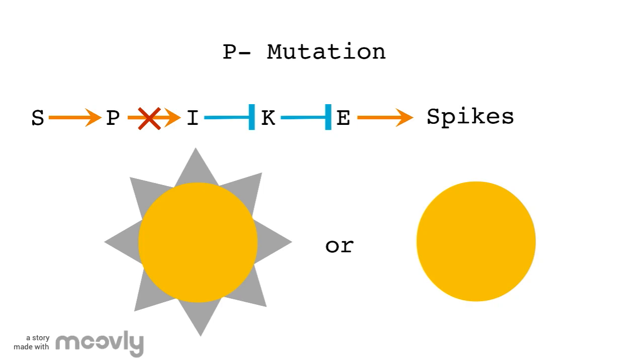The first mutation we'll look at resulted in no functional P genes. To determine the results, we simply need to follow the pathway. If the P gene stops working, the I gene will be expressed, preventing the inhibition of the K gene, which now blocks both the E gene and the formation of spikes, resulting in a smooth cell.